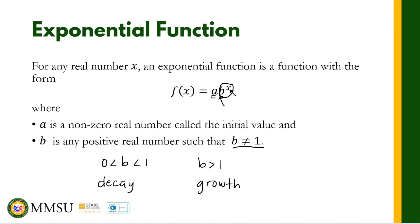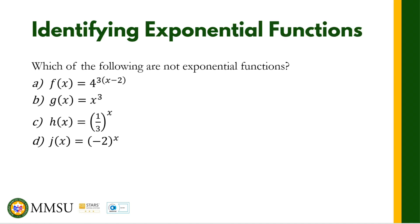Let us now identify certain functions and determine if they are exponential or not. For letter A, we have f(x) = 4 · 4^(3x − 2). Our base is 4, which fits — it is a positive real number, and the independent variable x is in the exponent. Therefore, this is an exponential function.